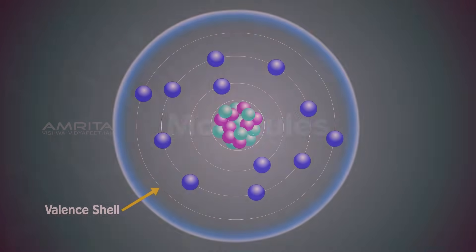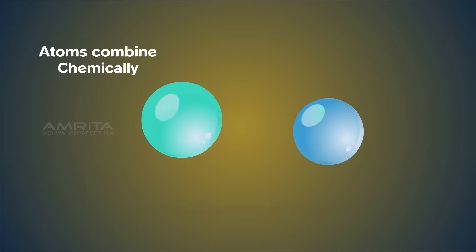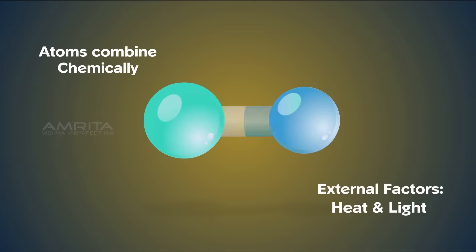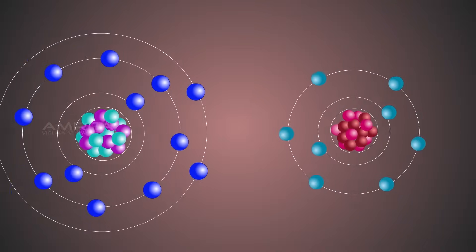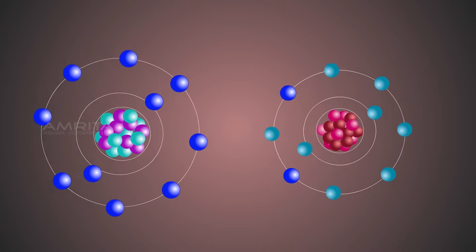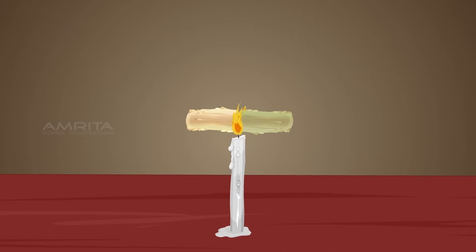A molecule is in general a group of two or more atoms that is chemically bonded together. Atoms combine chemically by external forces such as heat and light. This leads to the formation of molecules. During the formation of a molecule, atoms lose their valence electrons or gain electrons from other atoms.